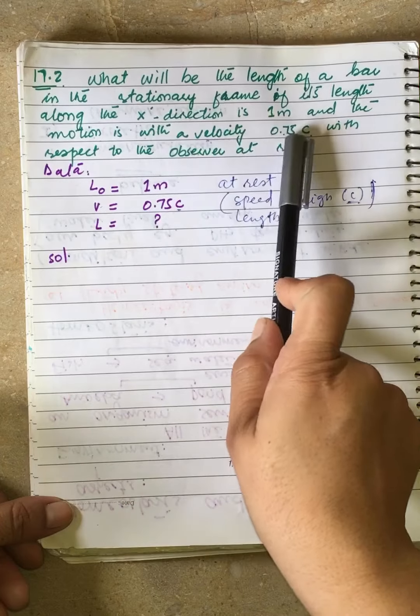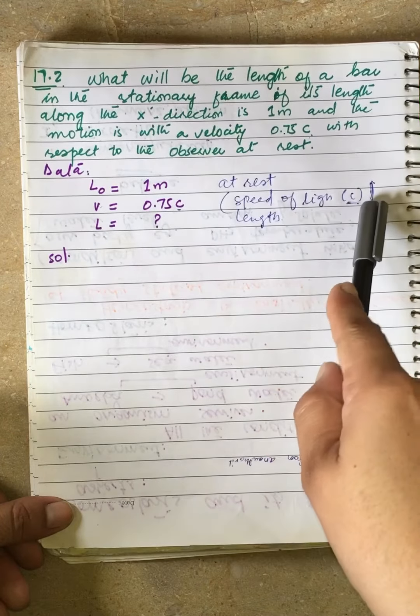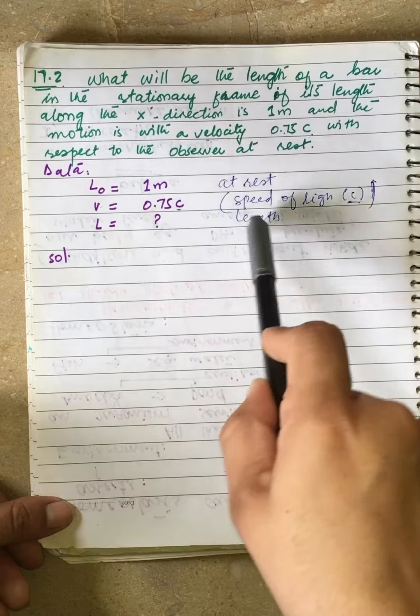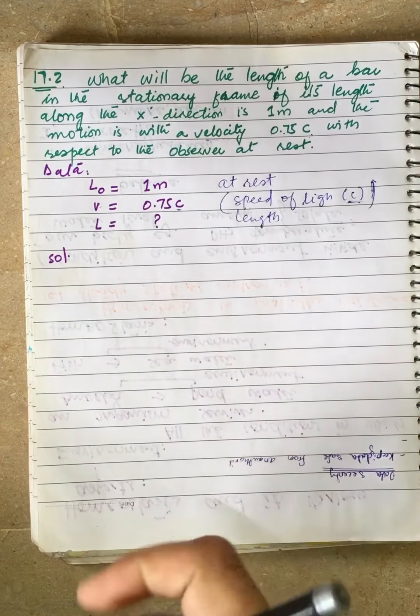Velocity is given as 0.75c, where c means speed of light, and L is the length. Let's start.